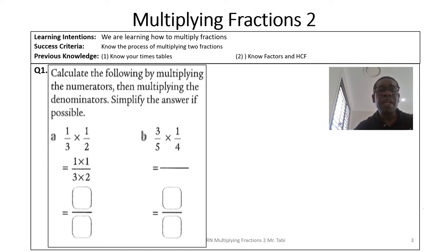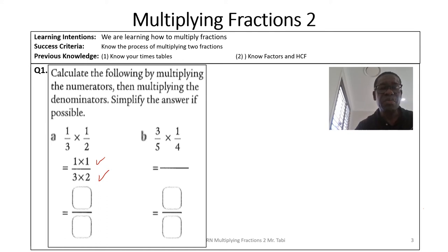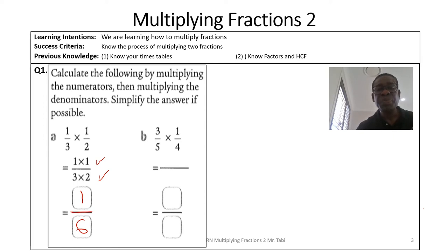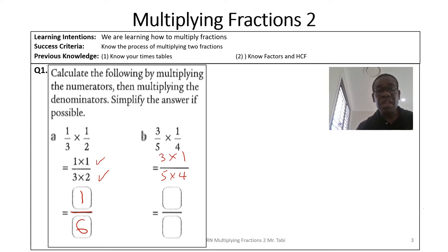Calculate the following by multiplying the numerators then multiplying the denominators, and simplify your answer if possible. For question a, 1/3 times 1/2: the numerators give one times one and the denominators three times two. Nothing to simplify, so one times one is one and three times two is six, giving 1/6. For question b, 3/5 times 1/4: three times one gives three and five times four gives 20, so the answer is 3/20.